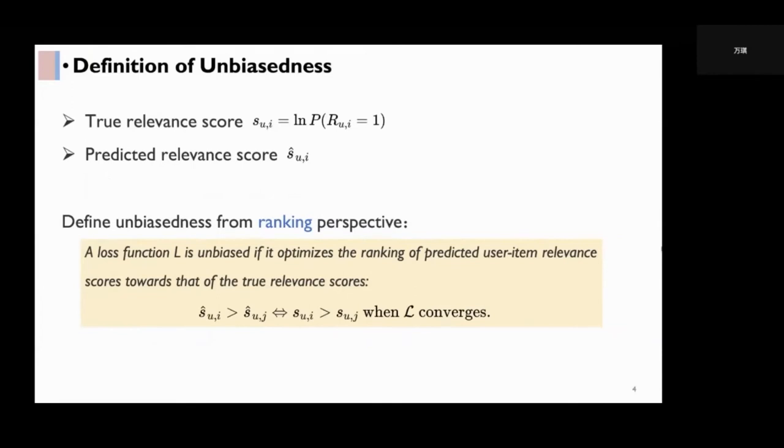Now we give our definition of unbiasedness from the ranking perspective. A loss function L is unbiased if it optimizes the ranking of predicted user item relevance scores towards that of the true relevance scores. Based on this definition, we will analyze the biasedness of mainstream loss functions.